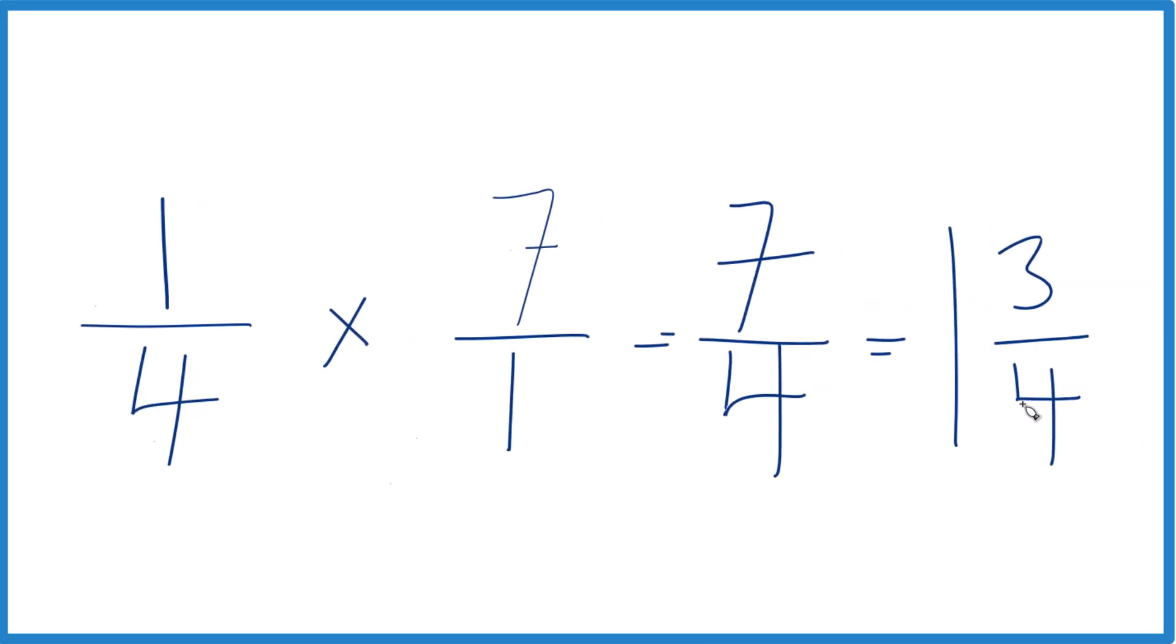You can check that. 1 times 4 is 4. 4 plus 3, that's the 7. Keep the 4 the same.